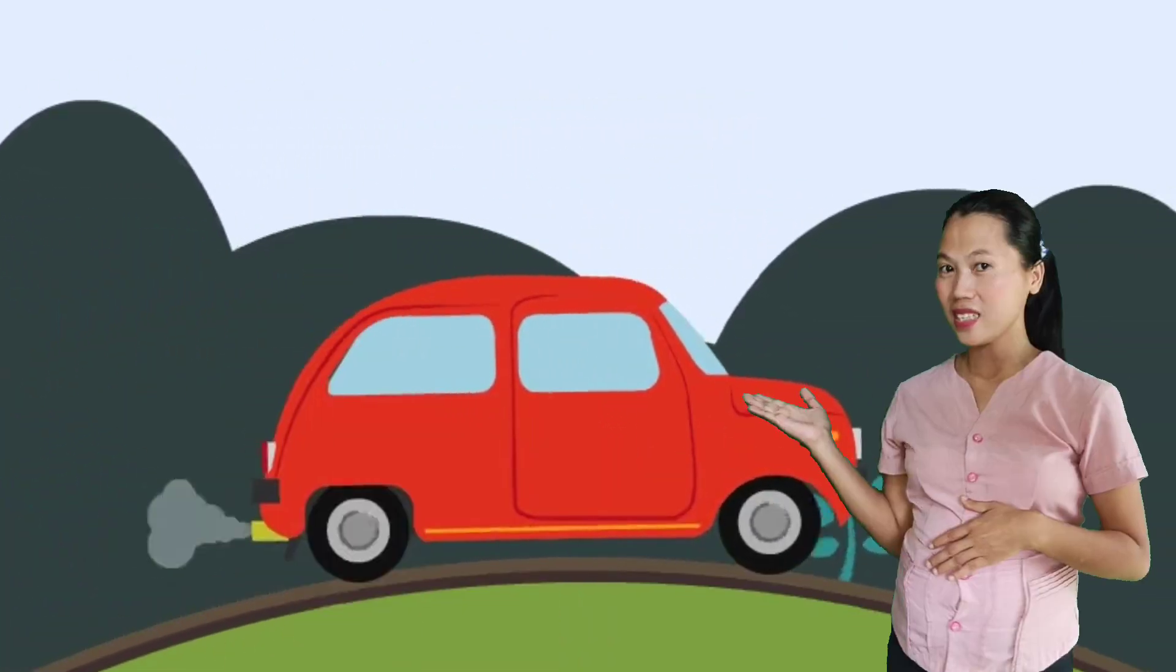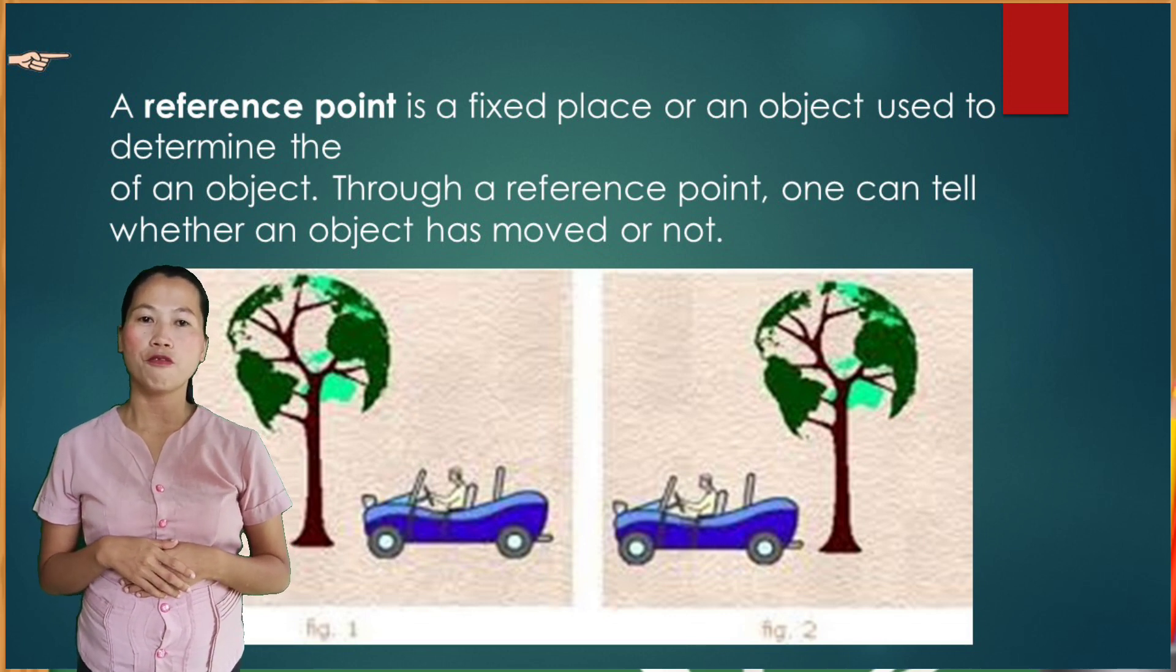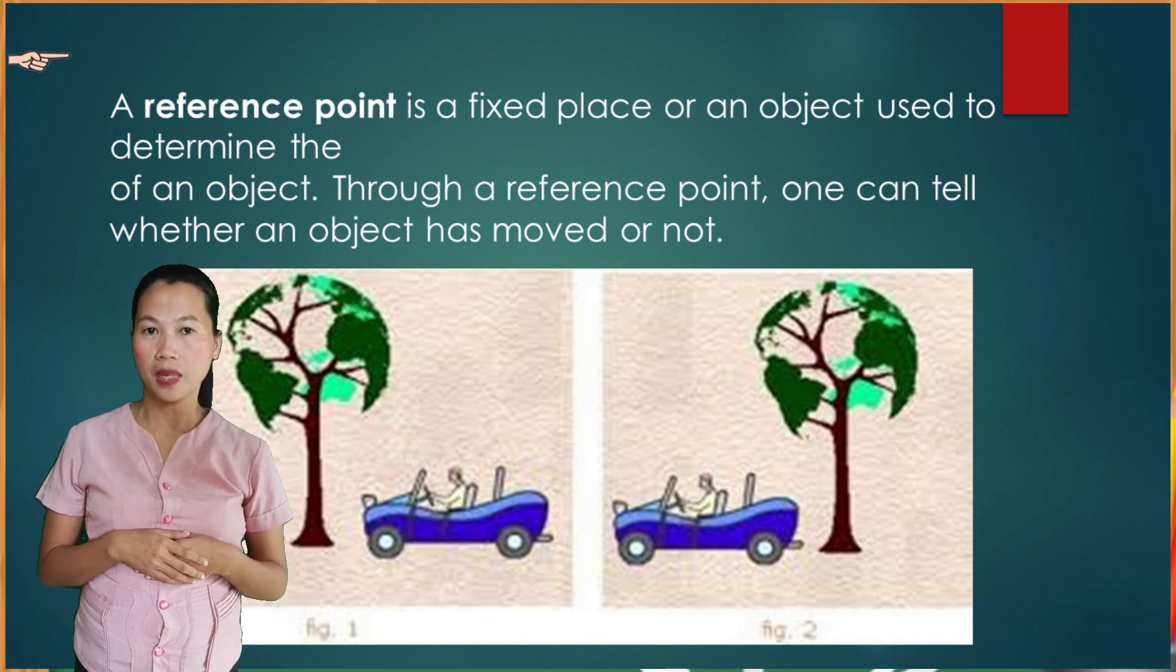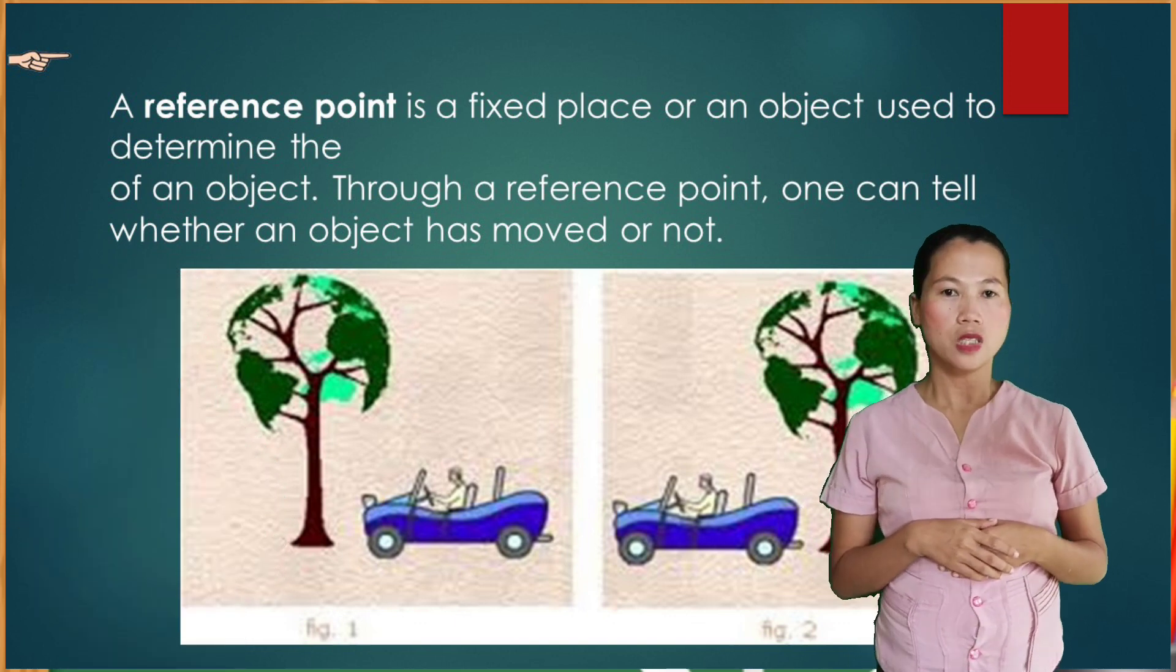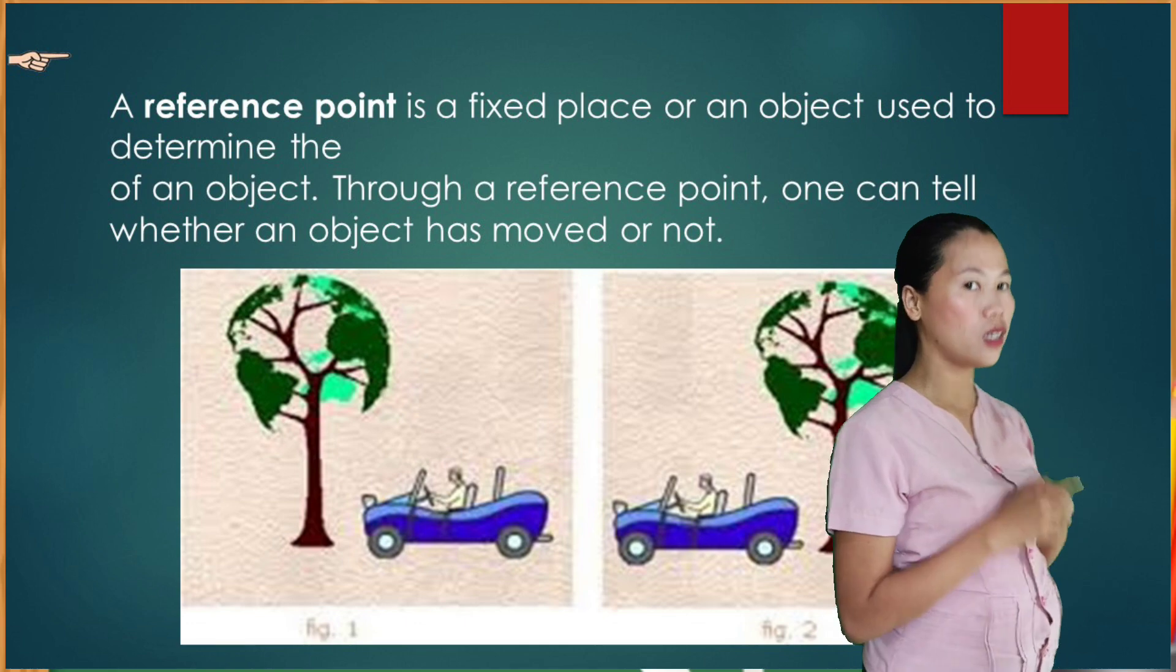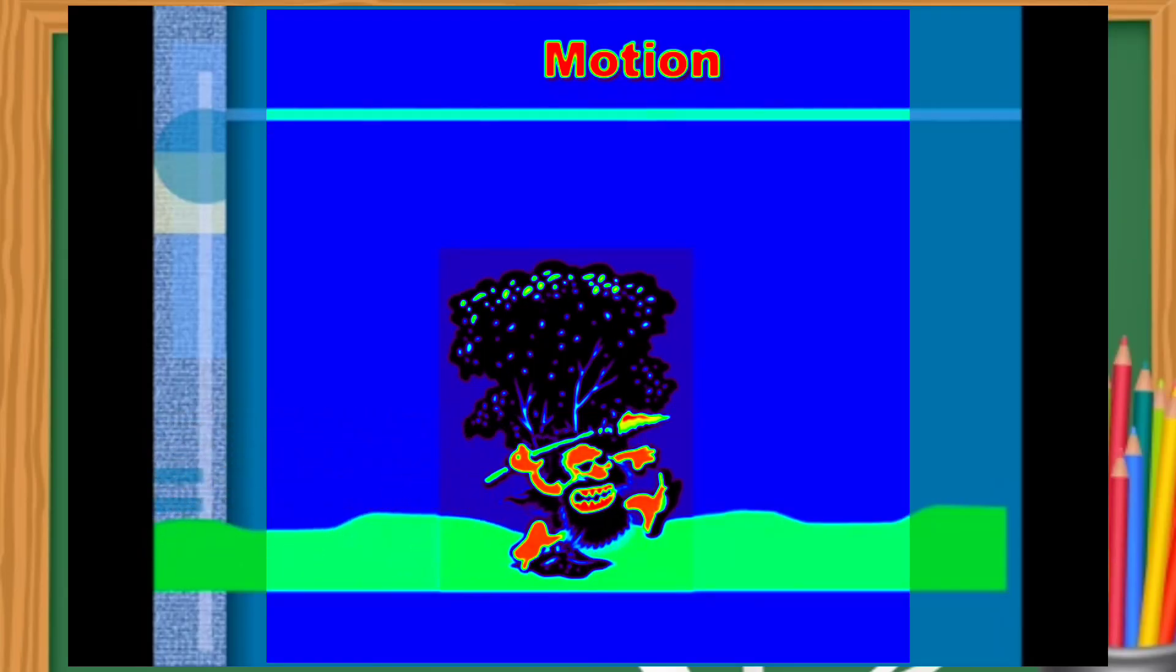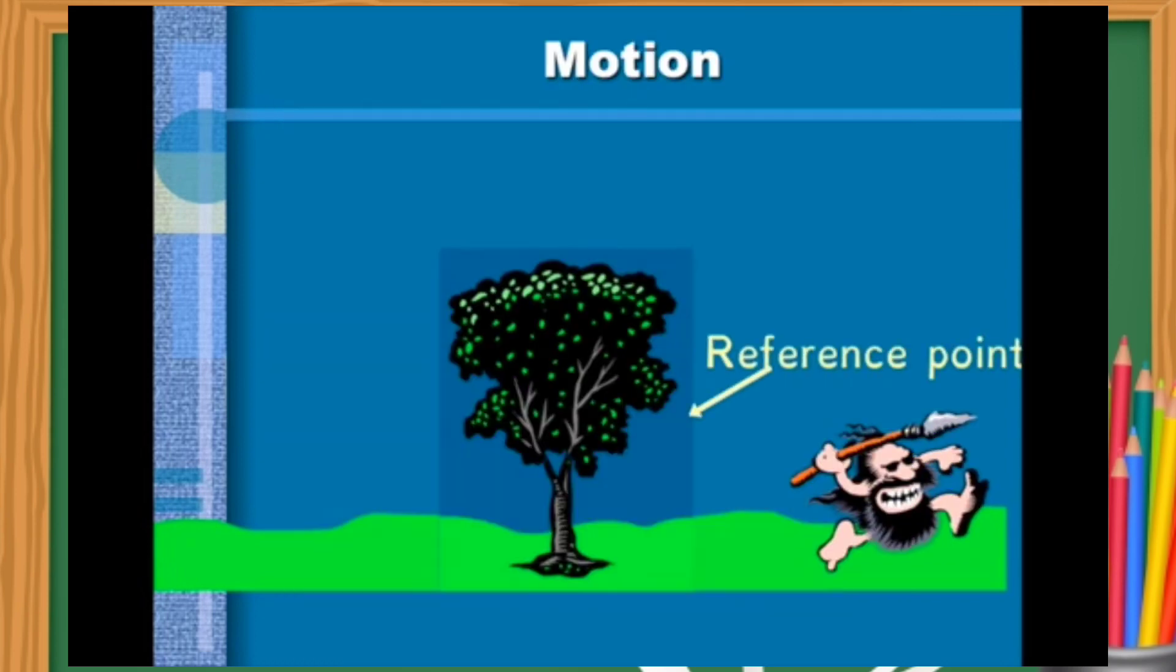A reference point is a fixed place or an object used to determine the position of an object. Through a reference point, one can tell whether an object has moved or not. This man is moving past the tree. Our tree is our reference point, which shows that this man is having motion.